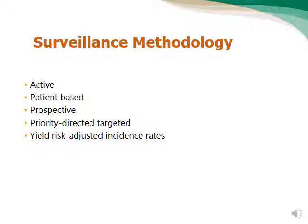The surveillance methodology of CAUTI is very similar to other device-associated infections. It is active, patient-based, prospective, priority-directed or targeted, and yields a risk-adjusted incidence rate. Active means you are looking actively for CAUTI events inside the unit under surveillance. Patient-based means you need to collect information about the patient's symptoms — it's not only lab-based or dependent on presence of bacteria in urine.